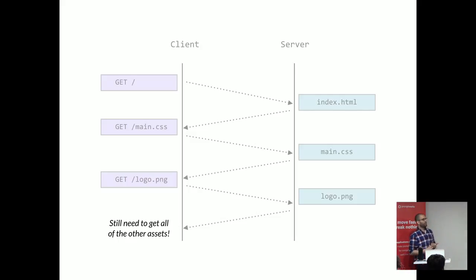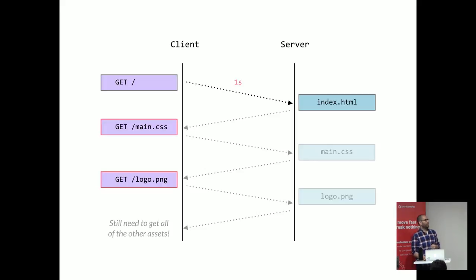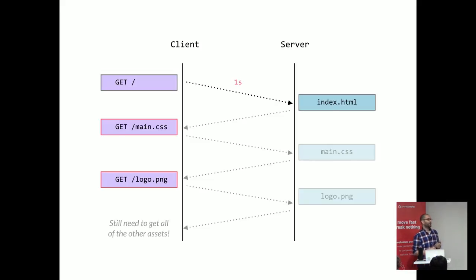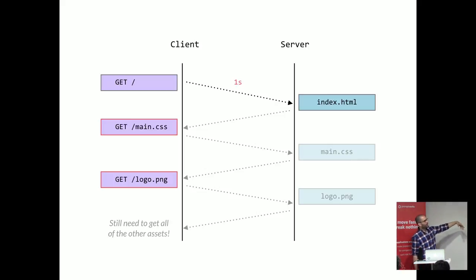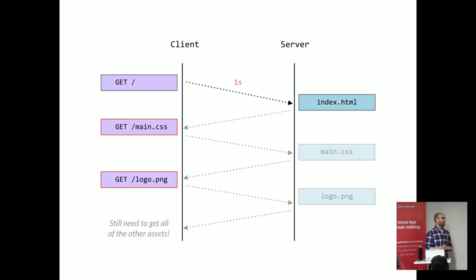We've already gone through three round trips for the TCP/SSL connection, then a couple more round trips just to start requesting resources, and then we have to get all the resources. This gets worse with high-latency connections — mobile devices, slow internet. Any interaction with the server that takes a long time means waiting for that latency all the way to the server and back. This phenomenon in HTTP is called head-of-line blocking, something HTTP/2 tries to address, and it's especially painful when optimizing websites for mobile devices.